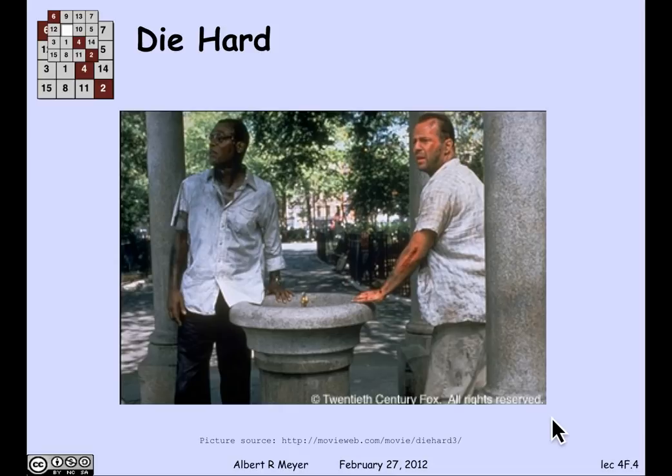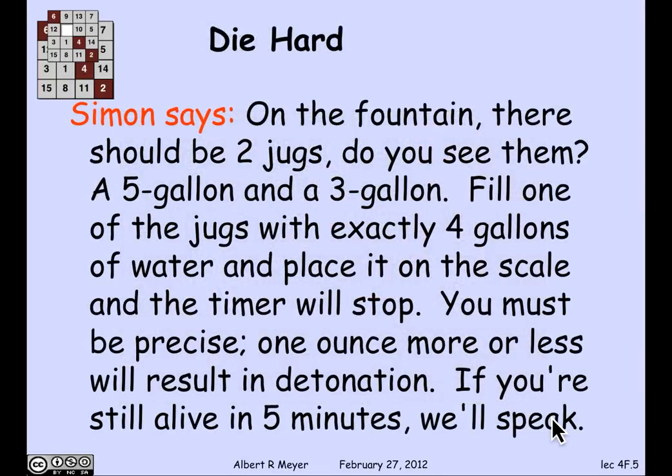Let's look at a fun example from a Die Hard movie. I've forgotten which one it was, but there was one with Bruce Willis and Samuel L. Jackson playing a detective and a friend that he meets who helps him deal with a madman, as is the case in all these movies. This time the madman's name is Simon. What Simon says to them as they stand behind the fountain in the park shown on the previous slide is that on the fountain there should be two jugs. Do you see them? A five gallon and a three gallon. Fill one of these jugs with exactly four gallons of water and place it on the scale, and the timer will stop. You must be precise. One ounce more or less will result in detonation. If you're still alive in five minutes, we'll speak.